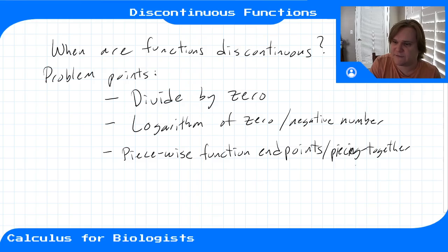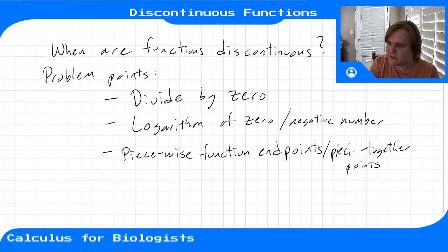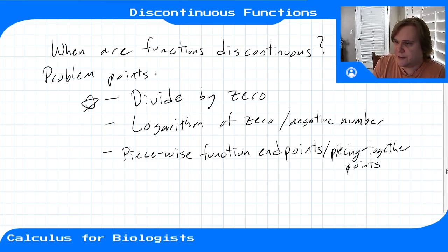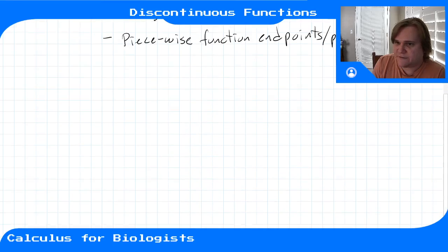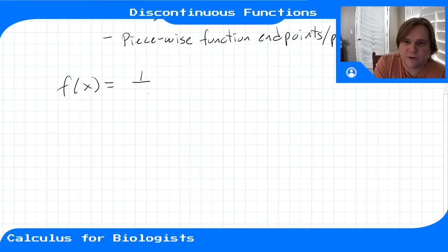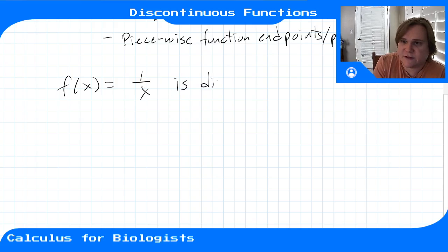If you have a piecewise defined function, then the places where you're piecing them together might be problem points. So let's start with dividing by zero. We saw some of these when we were talking about infinite limits. Some basic functions where they're discontinuous: f(x) = 1/x is discontinuous at x = 0.